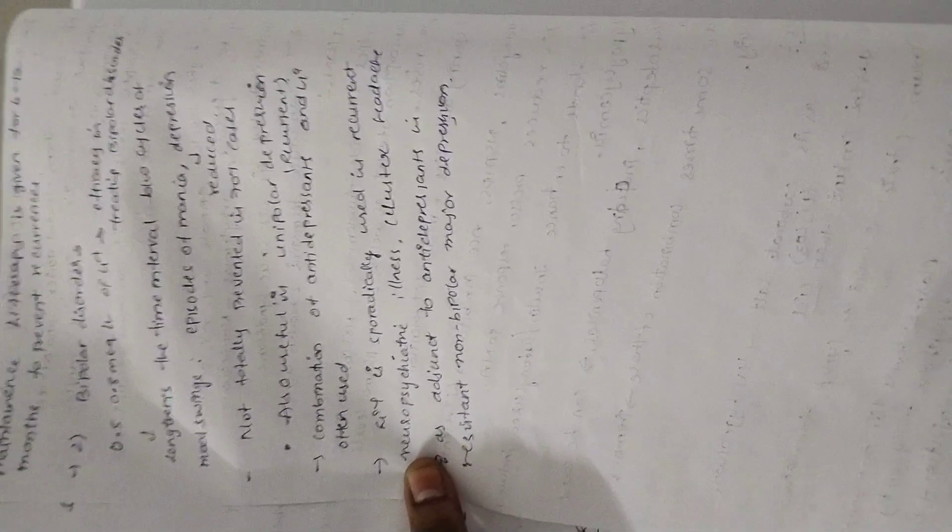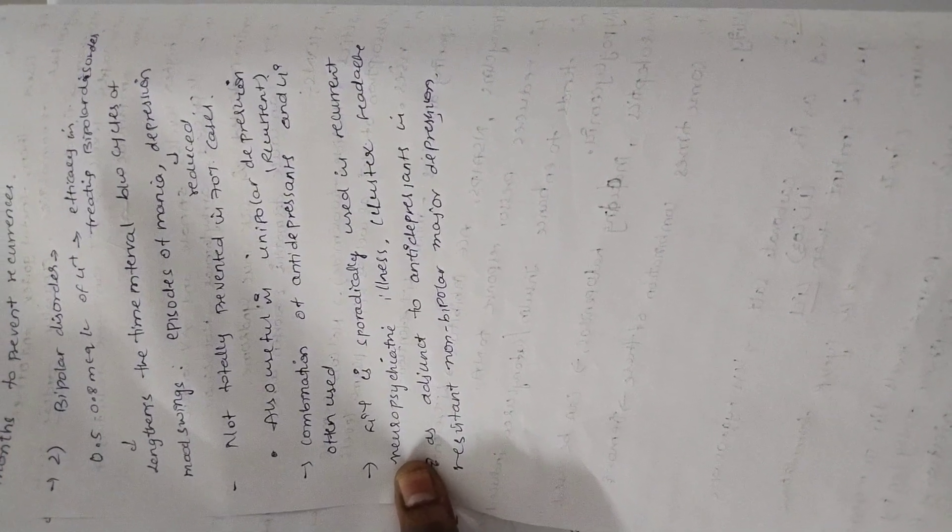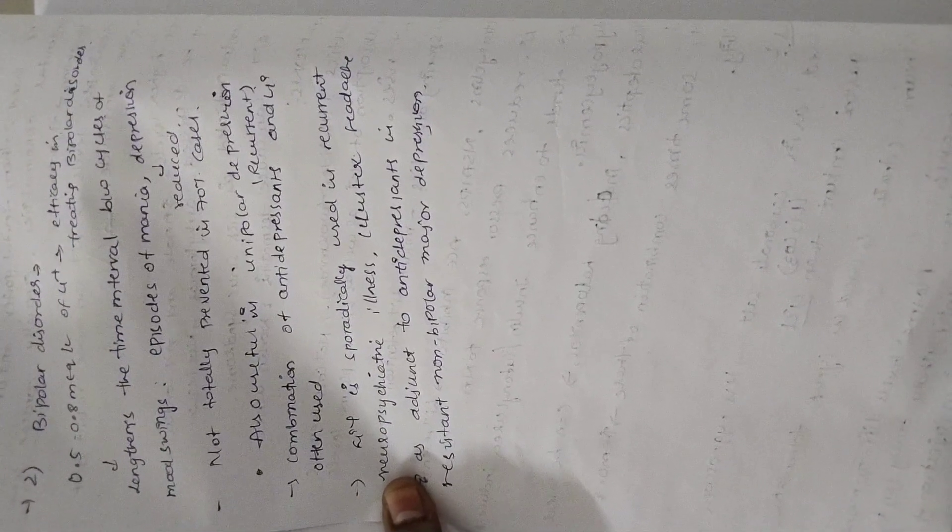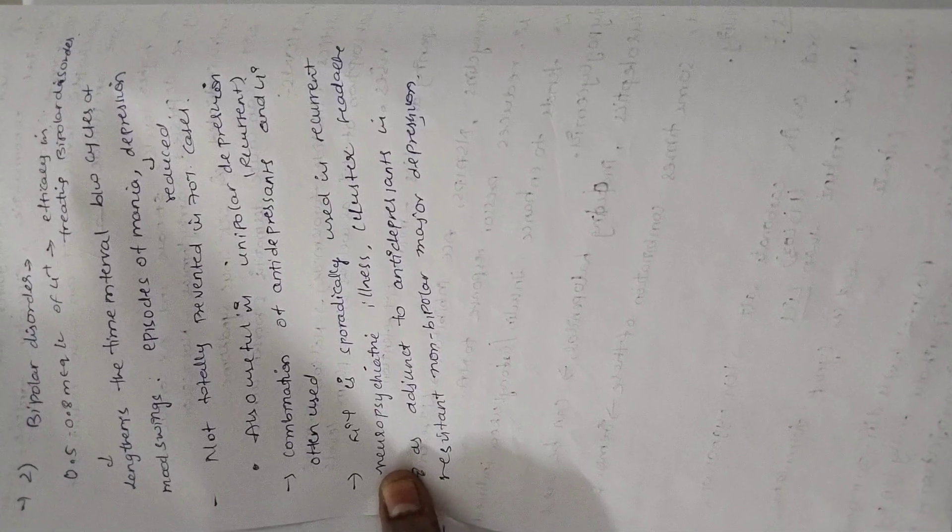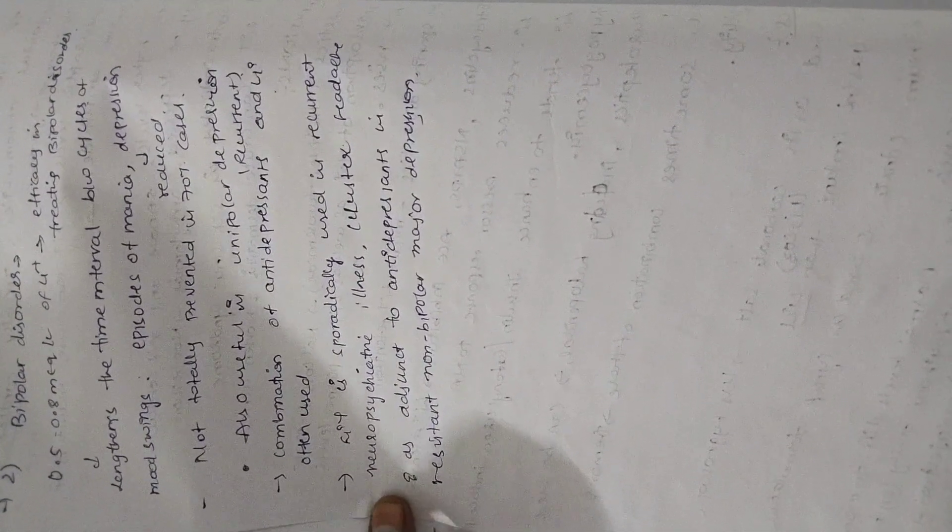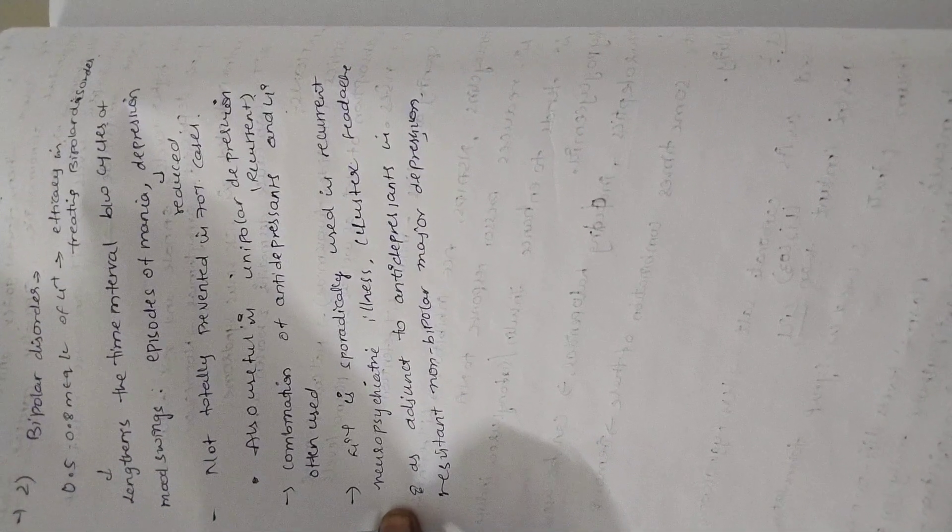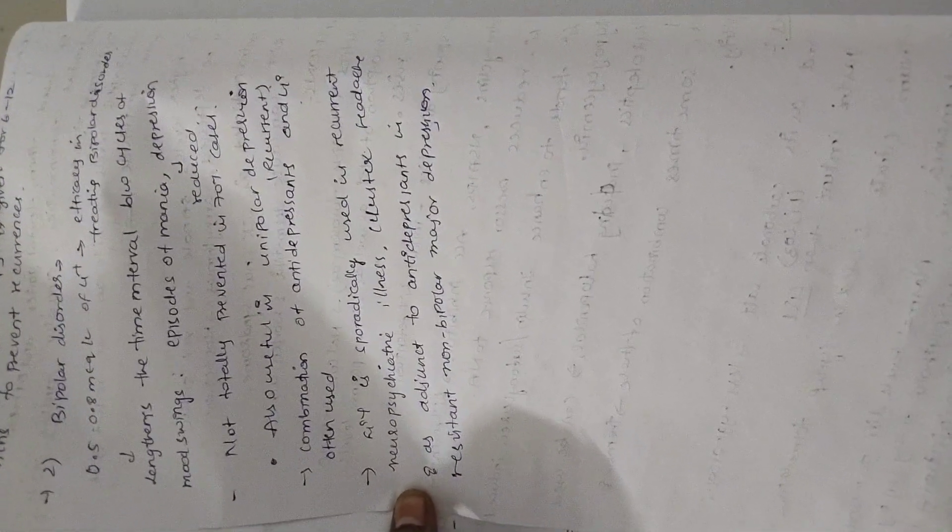In bipolar disorders also we are using lithium. 0.5 to 0.8 milliequivalent per liter is used efficiently in treating bipolar disorders. It lengthens the time interval between the cycles of mood swings, not totally prevented in 70% of cases. It is also useful not only in bipolar depression but also in unipolar depression if it is recurrent. Combination of antidepressants and lithium is often used in unipolar disorders. Lithium is sporadically used in recurrent neuropsychiatric illness, cluster headaches, and adjunct to antidepressants in resistant non-bipolar major depression. Thank you guys for patiently listening to me. Thank you very much for your support.